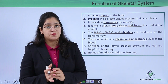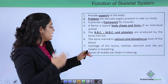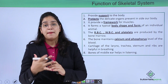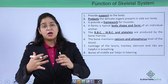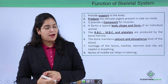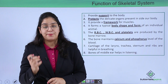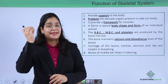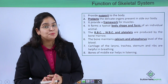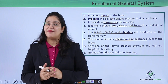The cartilage of the larynx, trachea, sternum, and ribs are helpful in breathing — because of them we are able to breathe in and breathe out. The bones of the middle ear help in listening, because the tympanum passes vibrations through the bone to the internal ear.